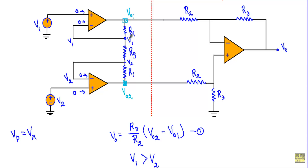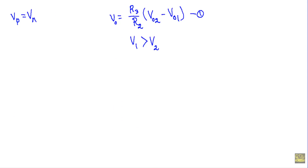The voltage at this terminal is V1 and at this terminal is V2. Since I have assumed V1 is greater than V2, if I assume the current through resistor RG is equal to I, it will flow in the indicated direction because V1 is greater than V2 — this terminal is at higher potential and this terminal is at lower potential. So I can calculate current I using: I equals V1 minus V2, divided by RG. Let's call this equation number two.